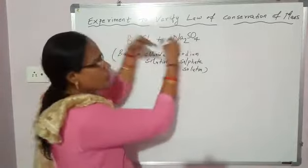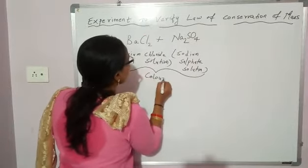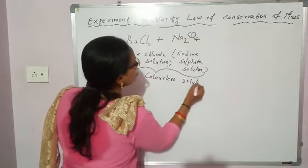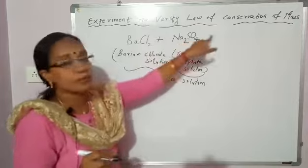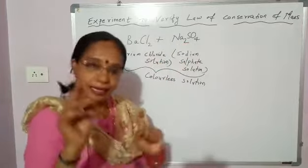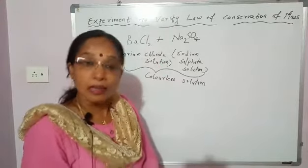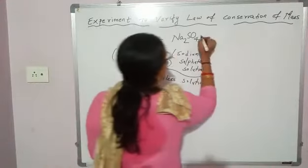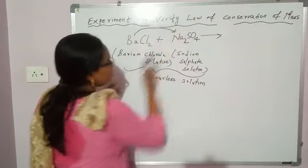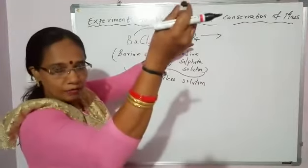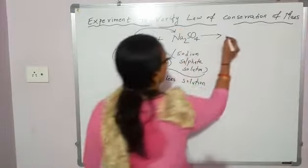So both solutions are mixed. Both the barium chloride solution and sodium sulfate solution are colorless. When you mix them, immediately you get a white precipitate. Barium will take the place of sodium — sodium will be displaced — so barium sulfate, BaSO₄, is formed as the white precipitate.